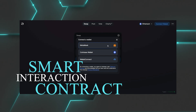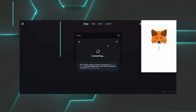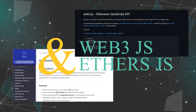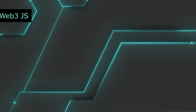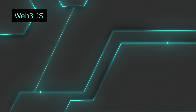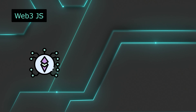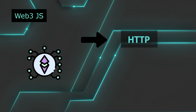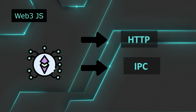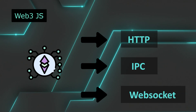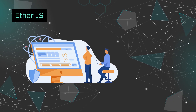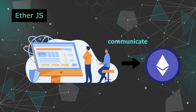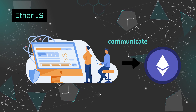To interact with smart contracts, you'll need to use a few libraries in your front-end, which are Web3.js and Ether.js. Web3.js is a collection of libraries that allow you to interact with local or remote Ethereum nodes using HTTP, IPC, or WebSocket. Similarly, the Ether.js library aims at being a complete and compact library for interacting with the Ethereum blockchain and its ecosystem.